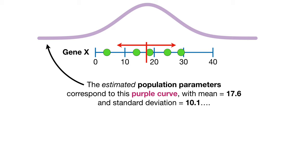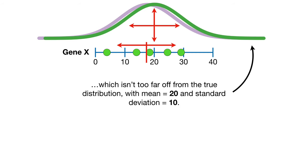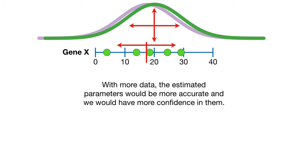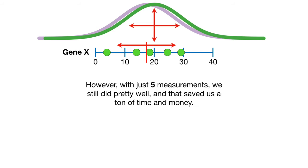The estimated population parameters correspond to this purple curve with mean equals 17.6 and standard deviation equals 10.1, which isn't too far off from the true distribution, with mean equals 20 and standard deviation equals 10. With more data, the estimated parameters would be more accurate and we would have more confidence in them. However, with just five measurements, we still did pretty well, and that saved us a ton of time and money.